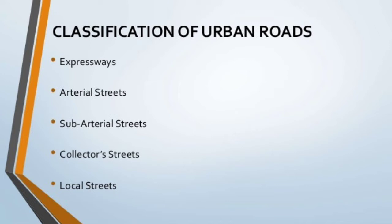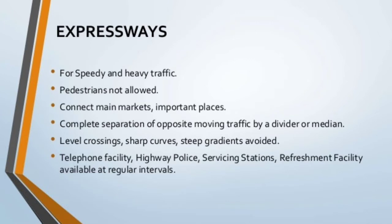The classification of urban roads includes expressways, arterial streets, sub-arterial streets, collector streets, and local streets. Expressways are designed for speedy and heavy traffic, and pedestrians are not allowed.